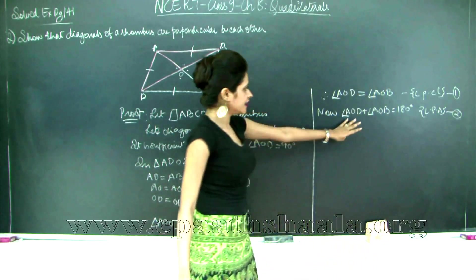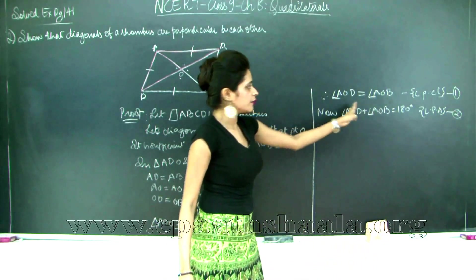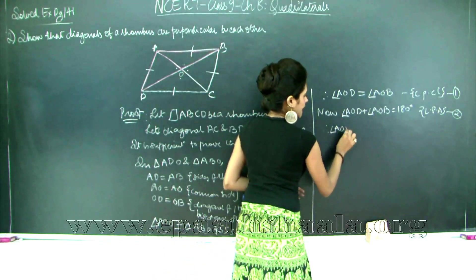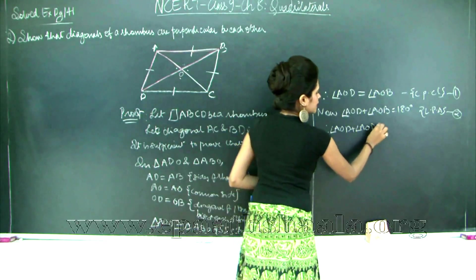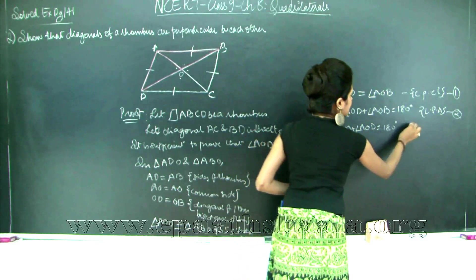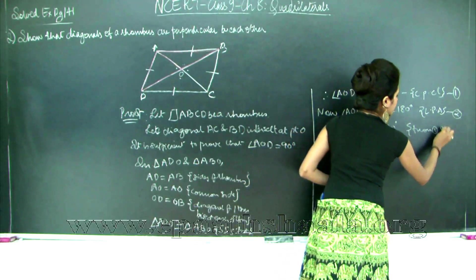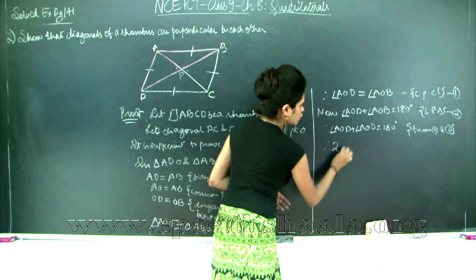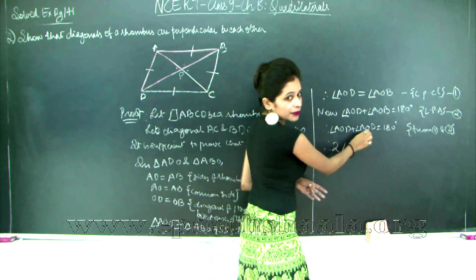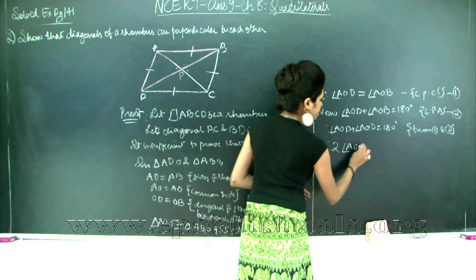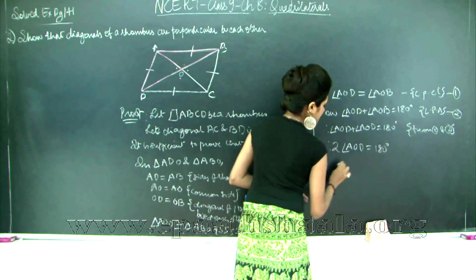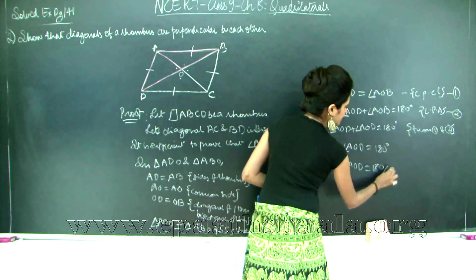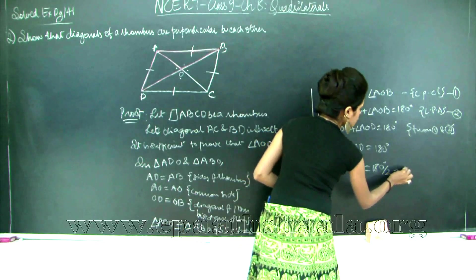From statements 1 and 2: since angle AOD equals angle AOB, I can replace angle AOD with angle AOB. So angle AOB plus angle AOB equals 180 degrees, which gives 2 times angle AOB equals 180 degrees. Therefore angle AOB equals 180 divided by 2, which equals 90 degrees.